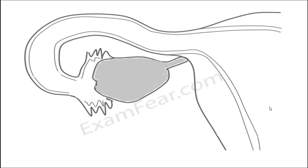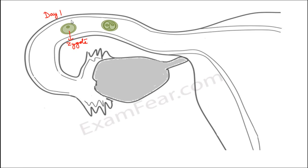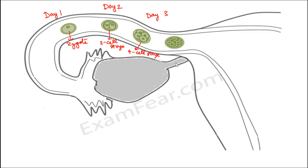Let us look at the entire process once again. On day one from fertilization, a single diploid zygote is formed. On day two it undergoes mitotic division to form the two-cell stage. Around day three, the four-cell stage forms. Around day four, the eight-cell stage forms — and you can see it is gradually entering the uterus, which is why it takes around four to five days for the zygote to travel from the fallopian tube to the uterus.